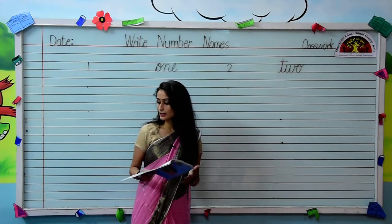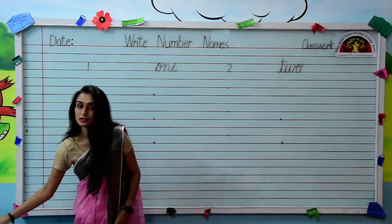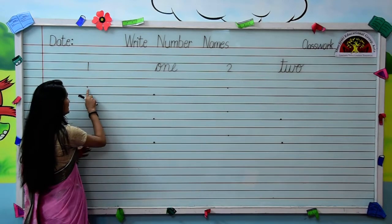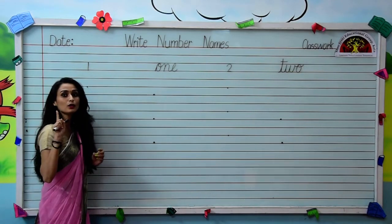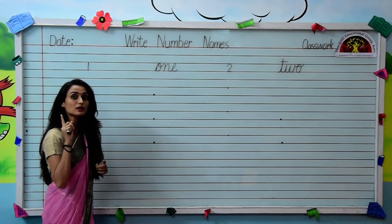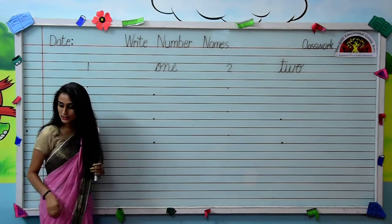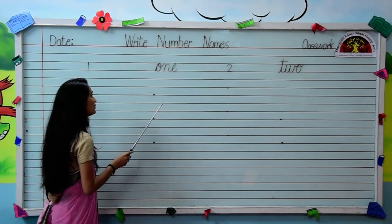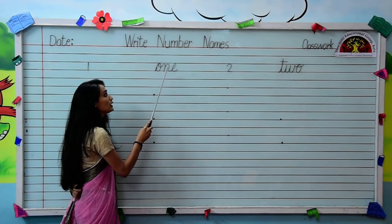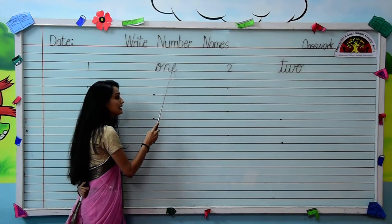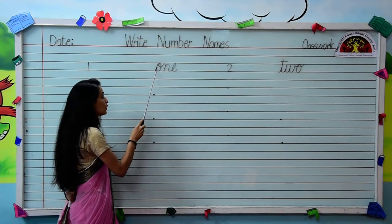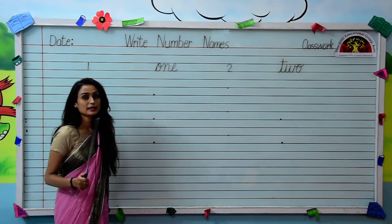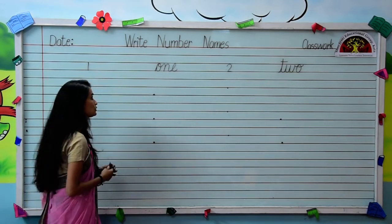Take out your pencil, kids, and put your pencil on the first dot. Firstly, we will write number 1. Can you please tell me what is the spelling of 1, kids? The spelling of number 1 is O-N-E. Now we will see how to write it.